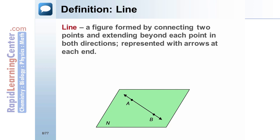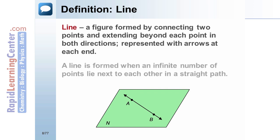Definition: Line. A line is a figure formed by connecting two points and extending beyond each point in both directions. Lines are represented with arrows at each end. A line is formed when an infinite number of points line up next to each other in a straight path.